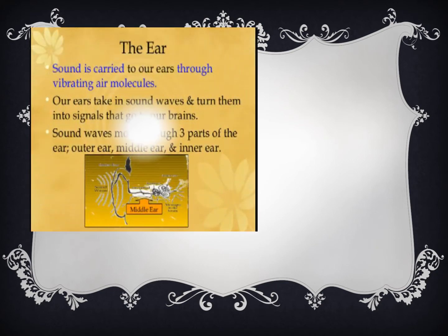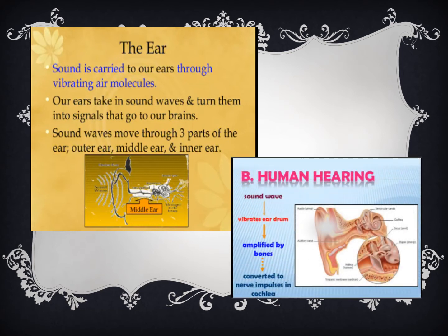Now we are going to learn how we hear. When an object produces sound, its surface vibrates. The molecules of air which are in contact with this vibrating surface also begin to vibrate. These molecules of air travel in the form of waves, one wave pushing the other outward.